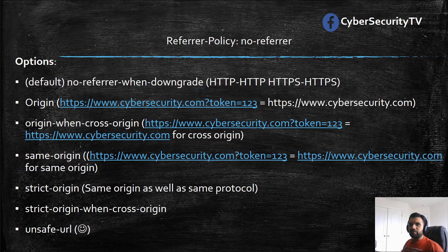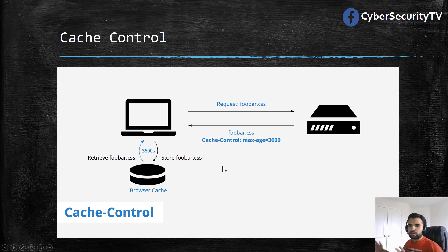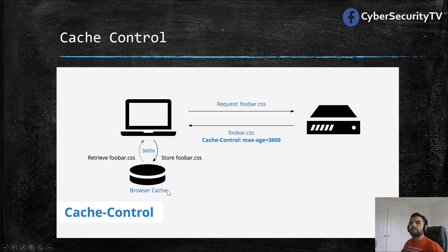So that's for the Referrer Policy. Now let's talk about Cache Control. This is something you must have seen before and heard several times. The communication is simple: the client requests something from the server, the server sends that back to the client and says the Cache-Control header is set — for example, keep this for 3600 seconds. So this is going to be stored in the browser's cache. Next time when the request comes back for, say, foobar.css, instead of going back to the server it's just going to retrieve from the browser. This is efficient because it limits the number of requests sent to the server and limits server bandwidth.